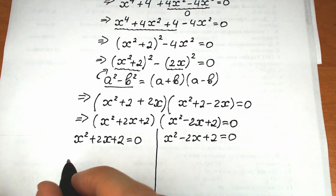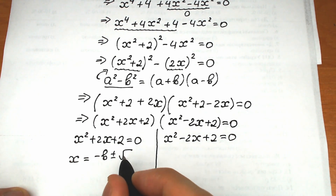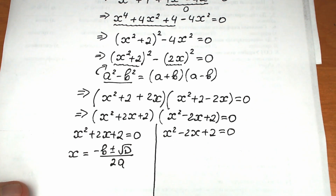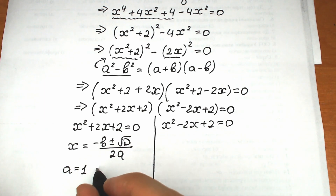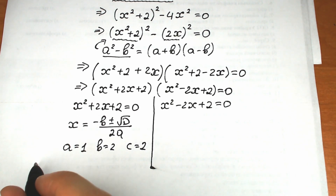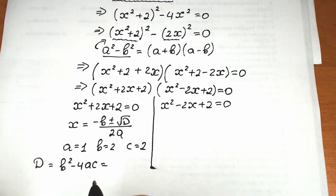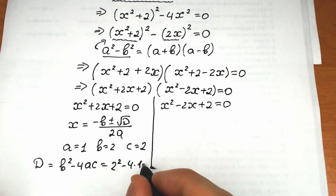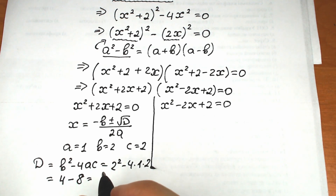We need the quadratic formula: x equals minus b plus or minus the square root of the discriminant, all over 2a. For the first case, x squared plus 2x plus 2 equals zero, we have a=1, b=2, c=2. The discriminant equals b squared minus 4ac: 2 squared minus 4 times 1 times 2 equals 4 minus 8, which gives us minus 4. The discriminant is negative, so there are no real roots.